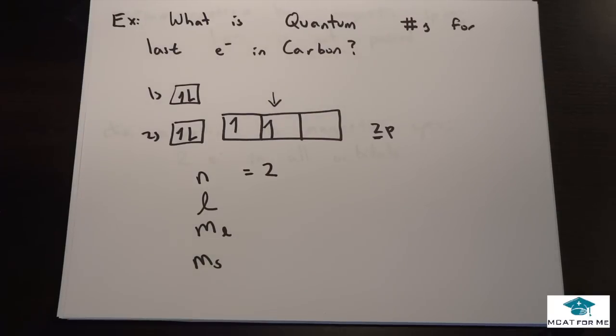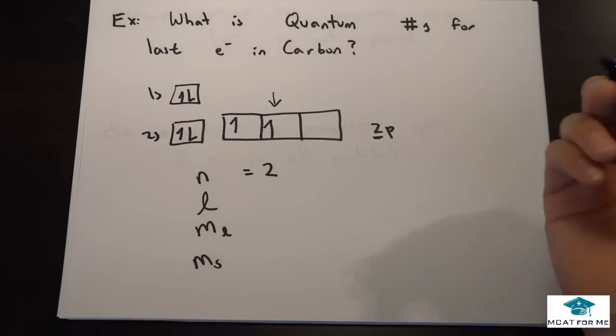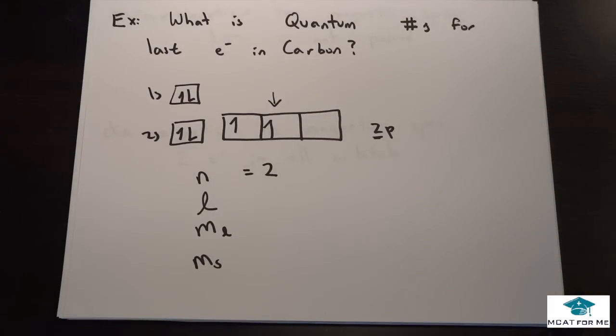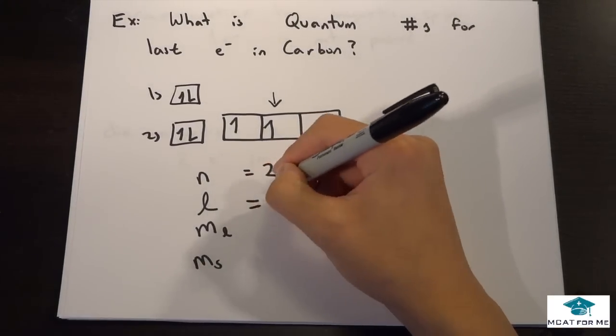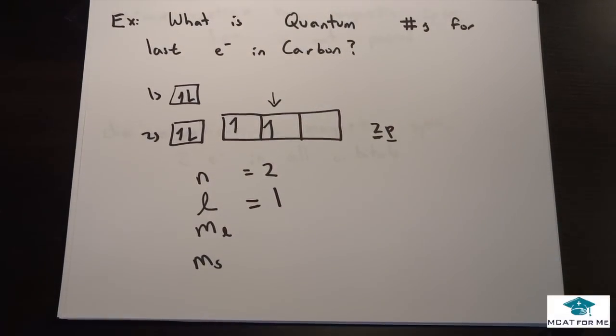Now remember L. L could either be 0 or 1 based on the n-1 rule, but because it's a P, remember P always is 1, S is always 0, D is always 2, and F is always 3.